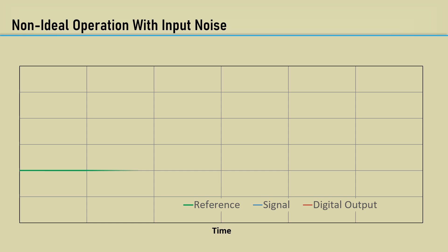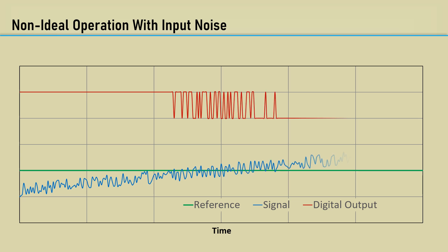If the input signal is noisy, this causes a problem with the comparator. Here is the reference input in green. As the noisy input signal voltage exceeds the reference voltage, the output follows the noise and causes what I call chatter. Some call it oscillation,